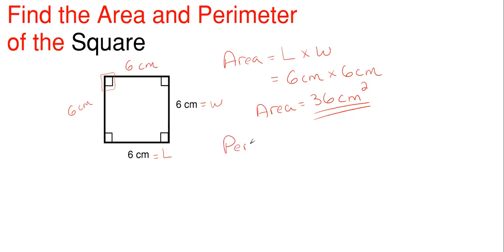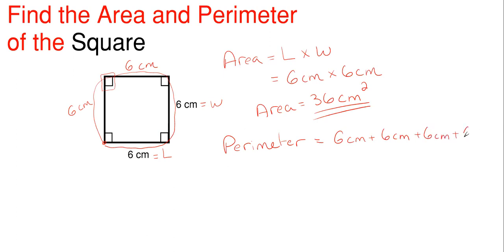Perimeter is just a fancy word for saying how much it takes to get around the entire object. When we have a four-sided shape like a square, we're going to add four dimensions together. All our dimensions are six centimeters, so if we start here and work our way around this shape, we encounter six centimeters four times. So the perimeter is six centimeters plus six centimeters plus six centimeters plus six more centimeters, giving us a total perimeter of 24 centimeters. We do not have a squared here because perimeter is a distance, so we need a non-squared dimension such as centimeters.